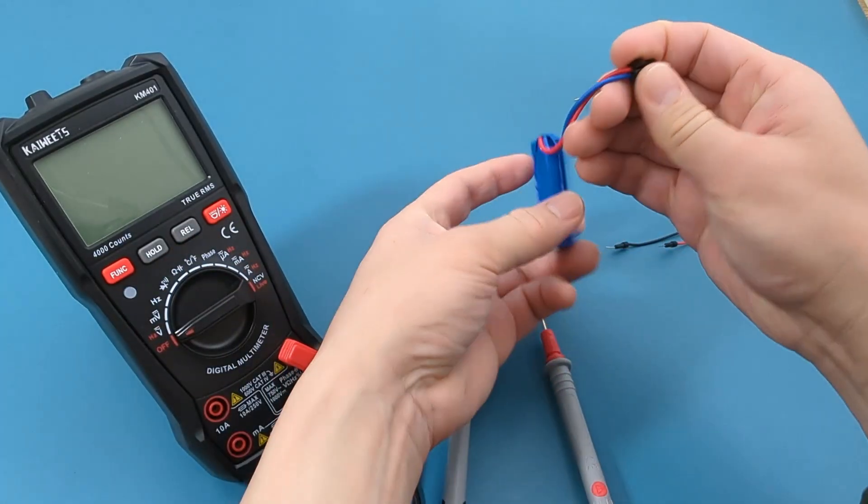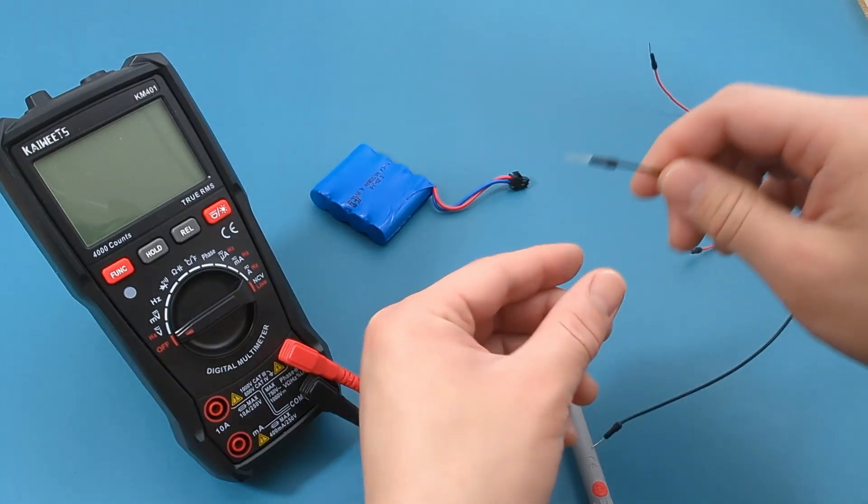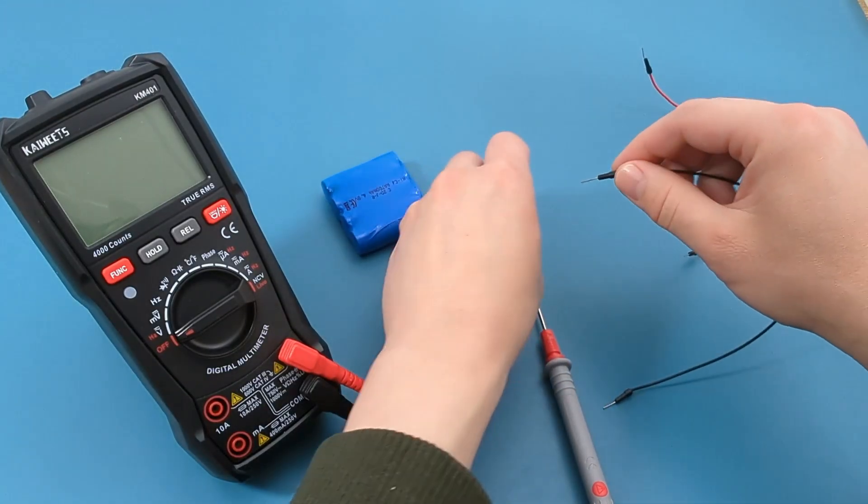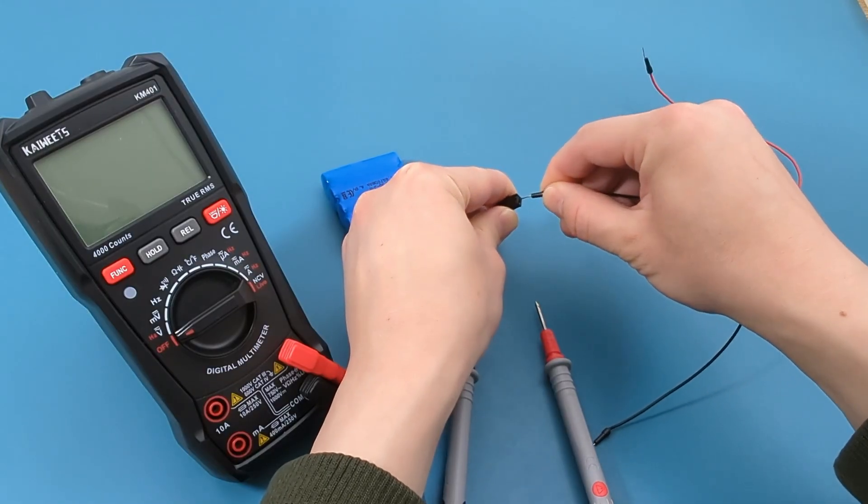This is where having jumper wires comes in handy. Connect one end of the jumper wire to the connector. The color coding of the jumper wires is not important in this test, but it will make sense in the next test.